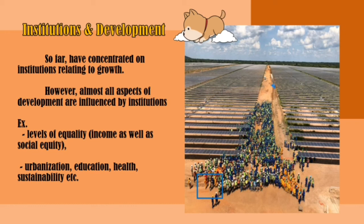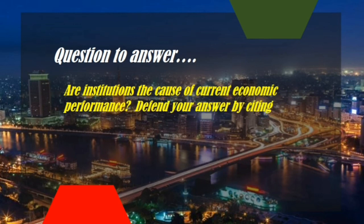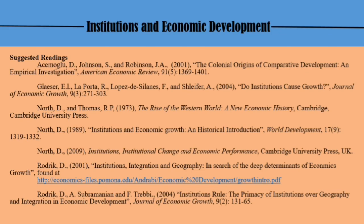Including also urbanization, education, health, sustainability, and the like. For this topic's activity, the question intended for you to answer is: Are our institutions the cause of our current economic performance? Defend your answer by citing literature from sources. The last slide contains suggested readings for you to check on as you answer the question and to further understand the topic in this video.